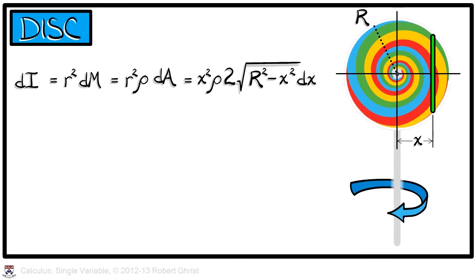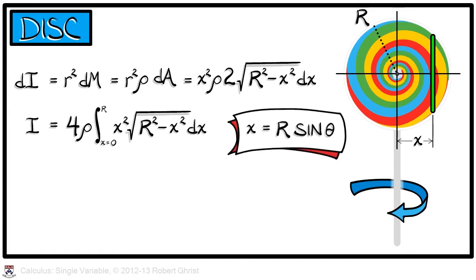we have an integrand of x squared times rho times twice the square root of capital R squared minus x squared dx. When we integrate this to get the moment of inertia, we can simplify things a little bit by integrating from 0 to capital R and then multiplying by 2, taking advantage of symmetry. Even so, this integral looks involved. We're going to need to try, at least, a trigonometric substitution.